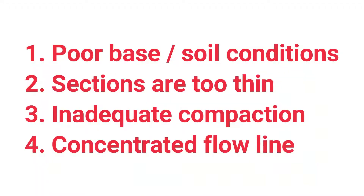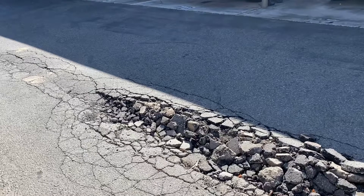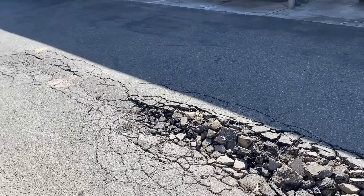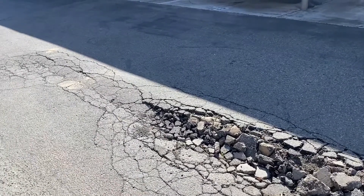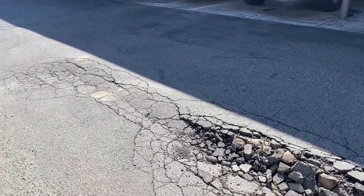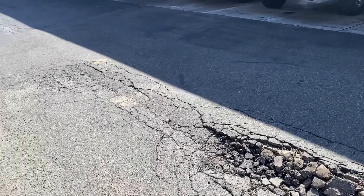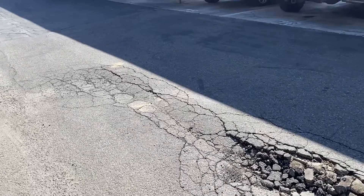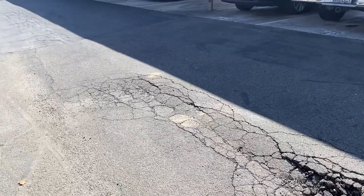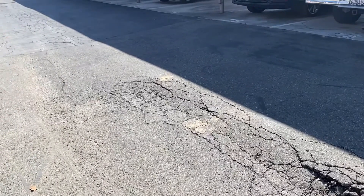Fourth, note the drainage pattern here. The water flows in a concentrated line over the area that gets the most traffic and has the least strength. In addition, note the loose aggregate on the surface. The asphalt is being weakened from the top down by the persistent concentrated flow of water.